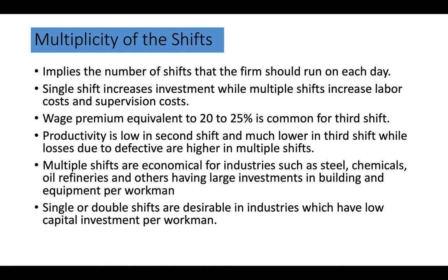Multiplicity of shifts is a determining factor for capacity planning. A single shift increases investment while multiple shifts increase labor cost and supervision cost. A wage premium of 20% to 25% is common for the third shift. Productivity is lower in the second shift and much lower in the third shift, while defect losses are higher in multiple shifts. Multiple shifts are economical for industries with high capital investment, such as steel, chemical, and oil refineries. Single or double shifts are desirable in industries with low capital investment per workman.